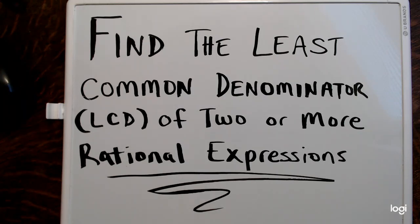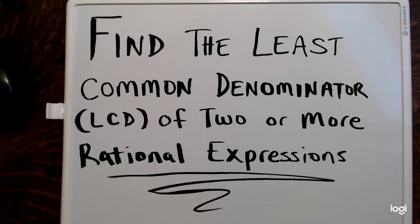Hello and welcome to this video on finding the least common denominator, or LCD, of two or more rational expressions. This covers several examples of finding the least common denominator, which is also the least common multiple of the denominators of two or more fractions. A rational expression is a fraction where the numerator and denominator are both polynomials.